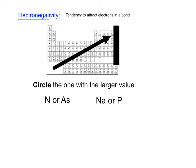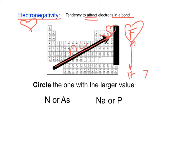Our second-to-last trend is electronegativity, which is the tendency to attract electrons in a bond. The general trend is that electronegativity increases as you move towards fluorine — fluorine is your most electronegative element. Fluorine is a halogen in group 17; it has 7 valence electrons and only needs one more to become stable, so it's very reactive to get that one more electron. As you trend up and to the right, your electronegativity is going to increase.